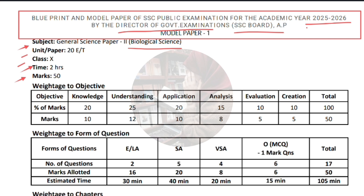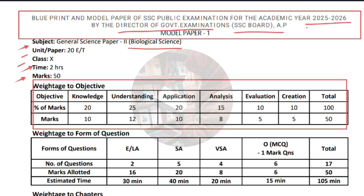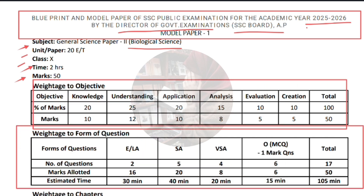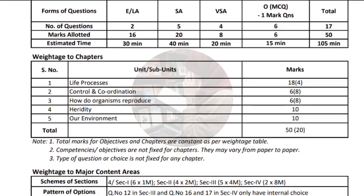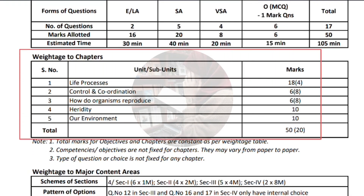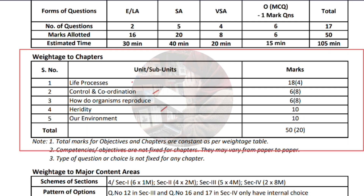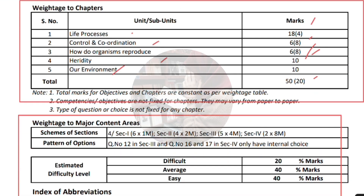We have tables here — please read and understand them carefully. The first table tells us about the weightage to objectives. The second table is weightage to form of questions. The third table, which is very important, tells us about the weightage to chapters — how marks are allotted for each chapter. Please take a screenshot and prepare according to the marks for that particular chapter. The last table is weightage to major content, and an estimated difficulty level is also given.